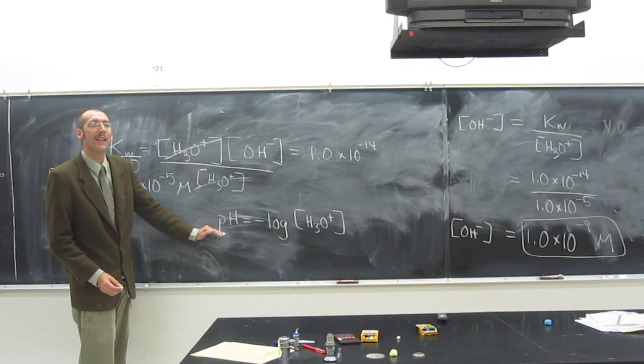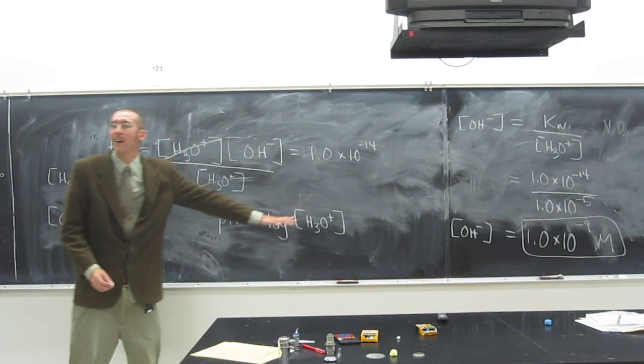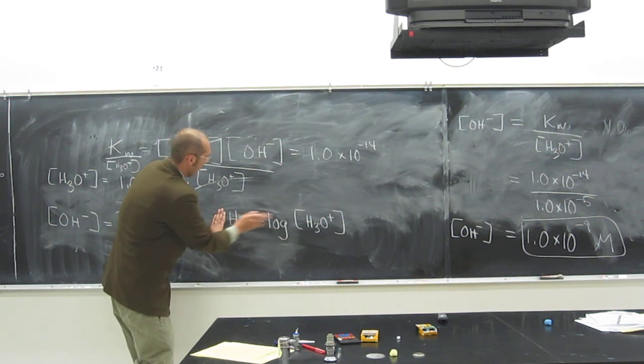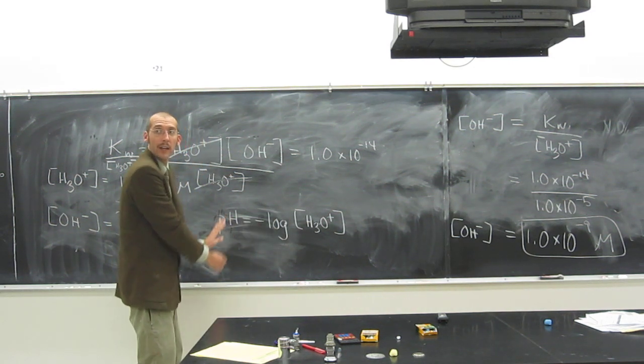So whenever you see this p, it's the negative log of. Where it means H, it's just saying how many protons.